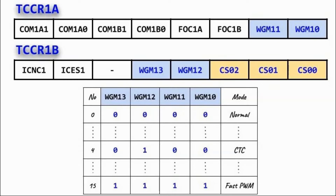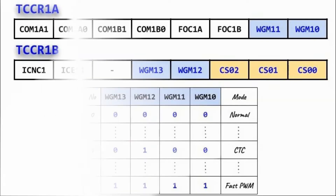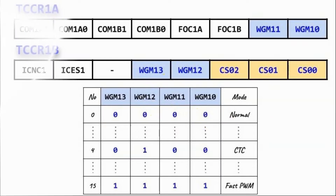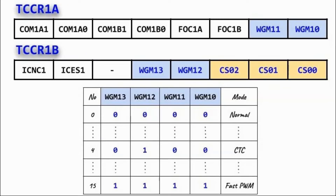We start with the Timer 1 Control Register, which is made of two registers: Control Register A and Control Register B. In this video we'll focus on programming Timer 1 in normal mode, which means Timer 1 is a normal counter that will count from 0 to 65535, and on the next count this will set the overflow flag. We use the control register to set the mode of operation by programming bits WGM10, WGM11, WGM12, and WGM13, located in Control Register A and Control Register B. To get normal mode we need to insert zeros into these bits.